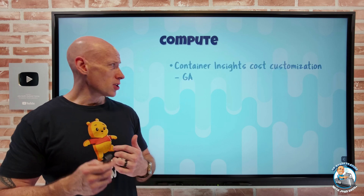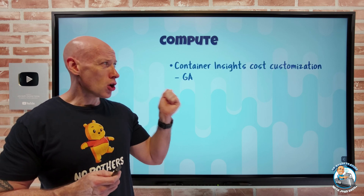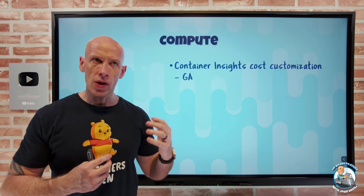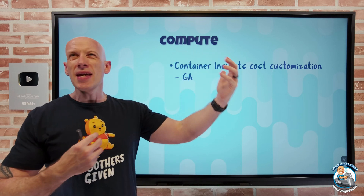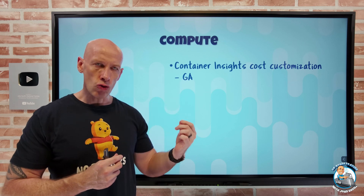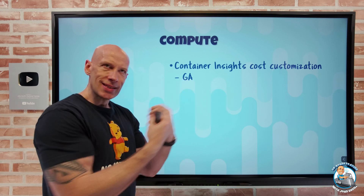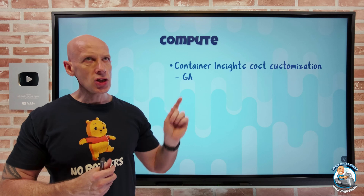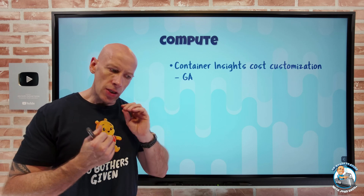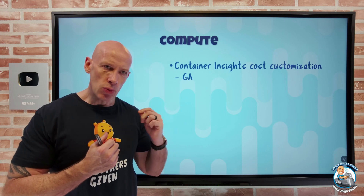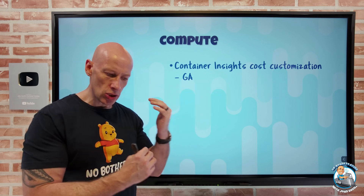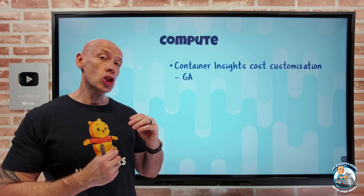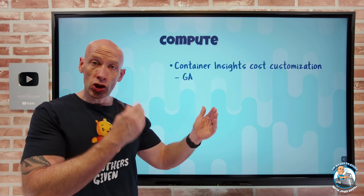New updates on the compute side. The container insights cost customisation has gone GA. The way the insight technologies work is it's a curated set of knowledge and advice by the different product groups, but it works by sending metrics telemetry to a log analytics workspace — and that ingestion costs money. What this customisation lets you do is two things: I can control which sets of data tables get populated, so I could turn particular ones off — for example, certain types of inventory or certain types of events.